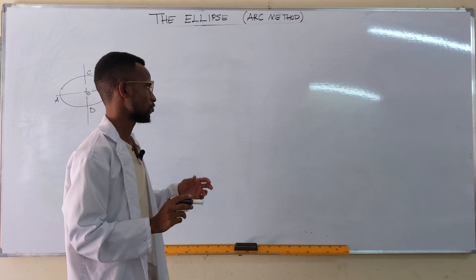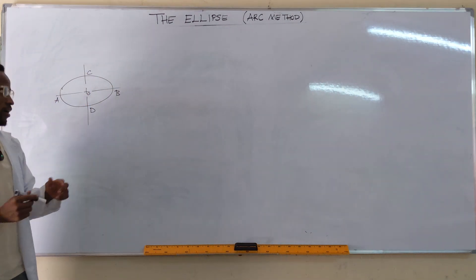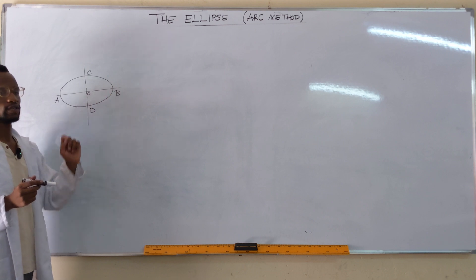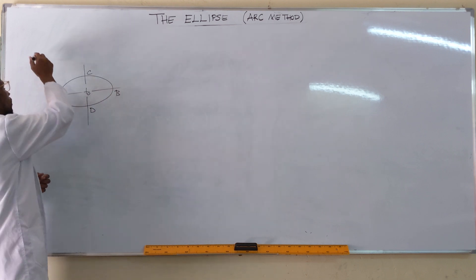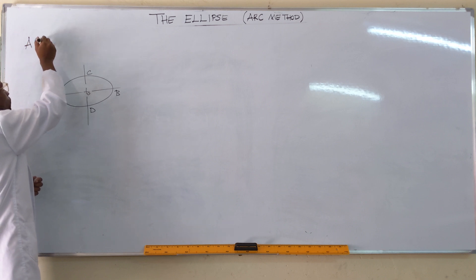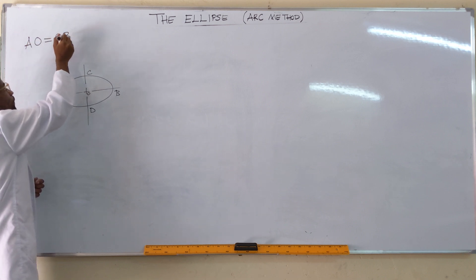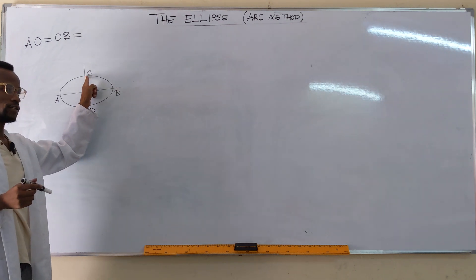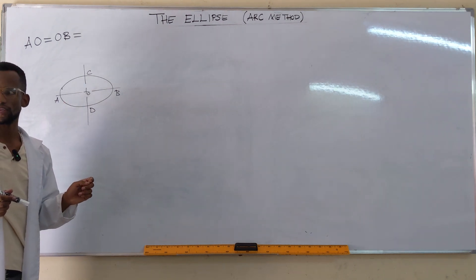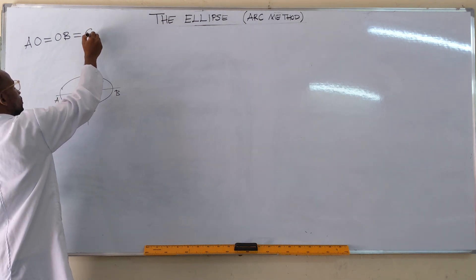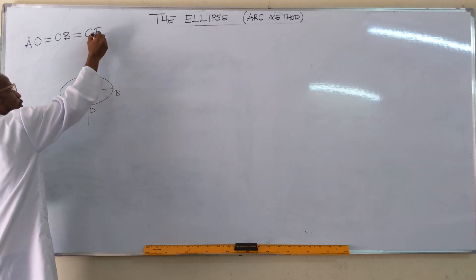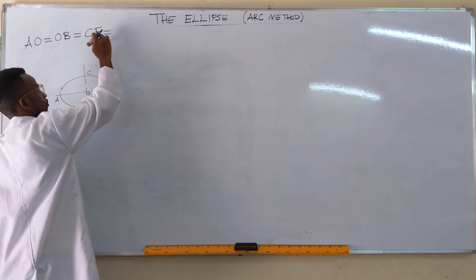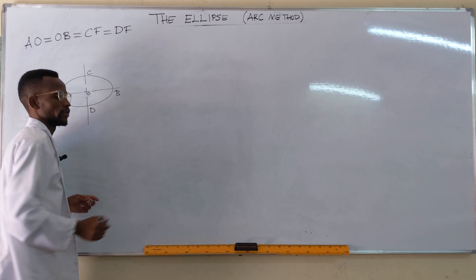The relationship between the focal point and the two axes is that when you get half the major axis — for example, distance AO, which equals OB — that should equal the distance from C to the focal point, which is the same as the distance from D to the focal point.